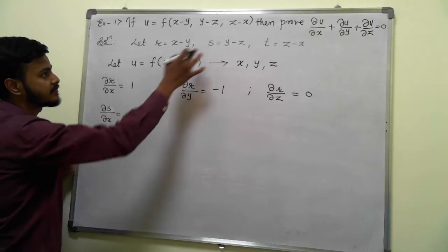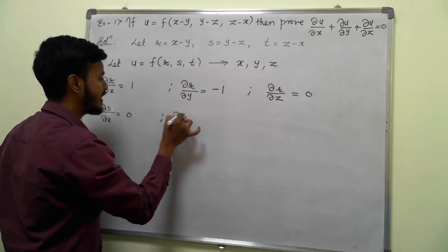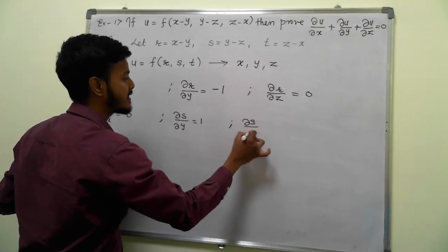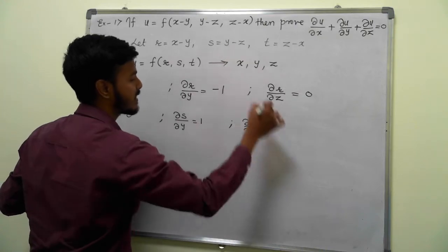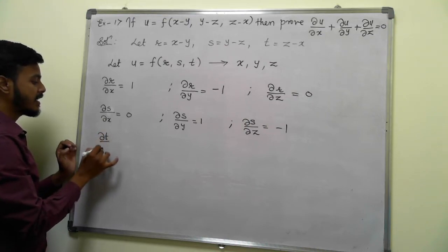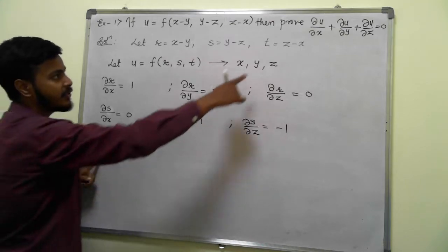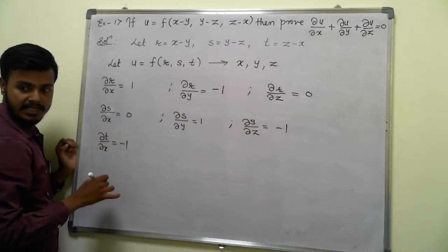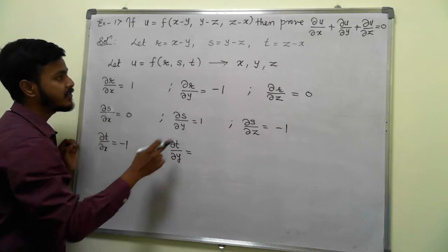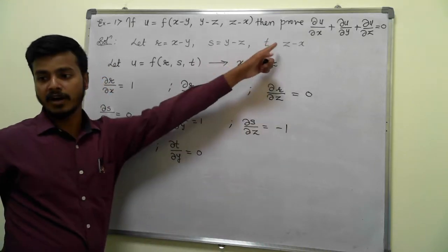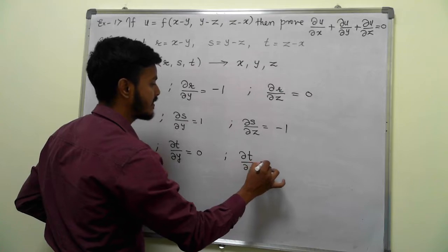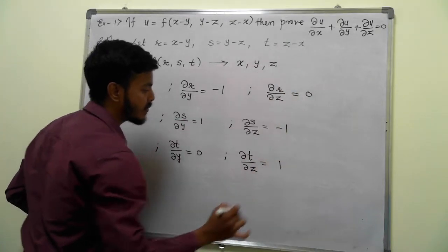∂s/∂x = 0. ∂s/∂y: y term is present, so 1−0 = 1. ∂s/∂z: 0−1 = −1. For t: ∂t/∂x = 0−1 = −1. ∂t/∂y: no y term, so derivative is 0. ∂t/∂z = 1.